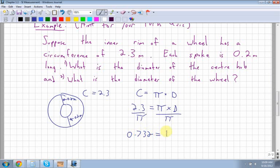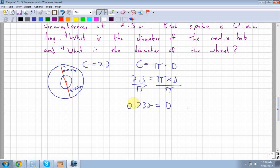When I divide by π, I get 0.732. That's equal to the diameter of the big wheel - the diameter going straight through the center all the way to the other side, right through the center of the entire thing. My diameter of the big wheel is 0.732.